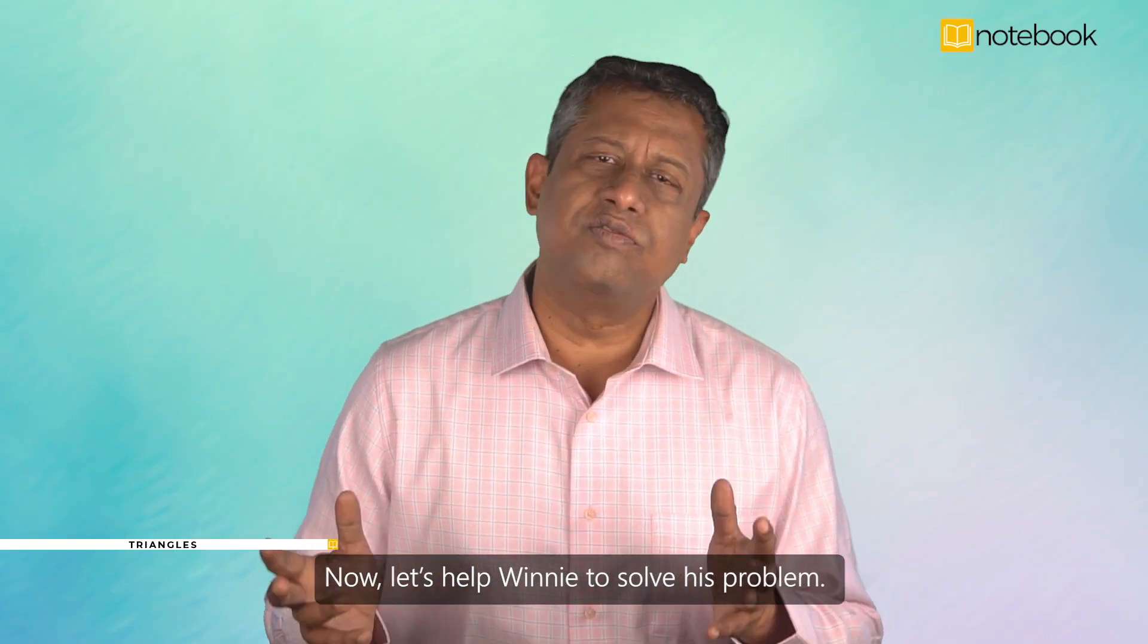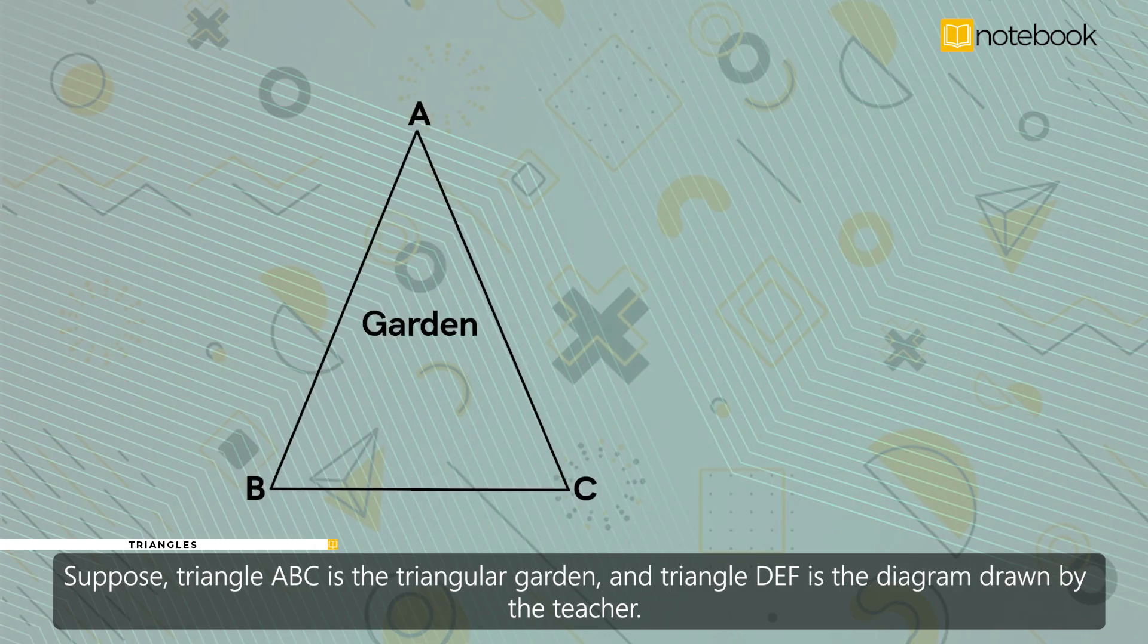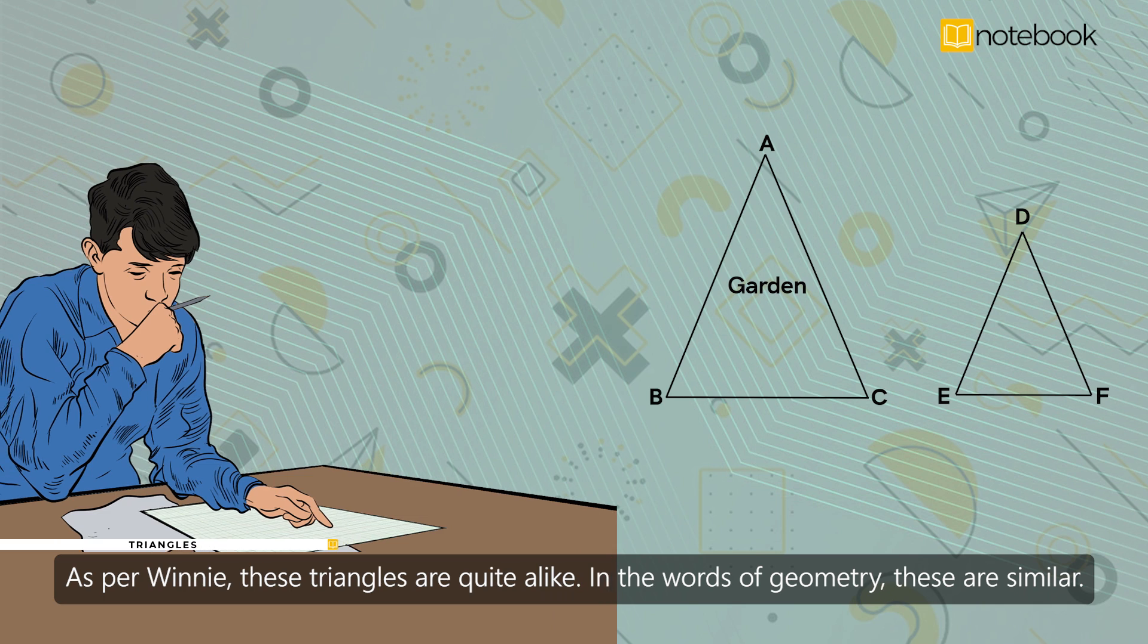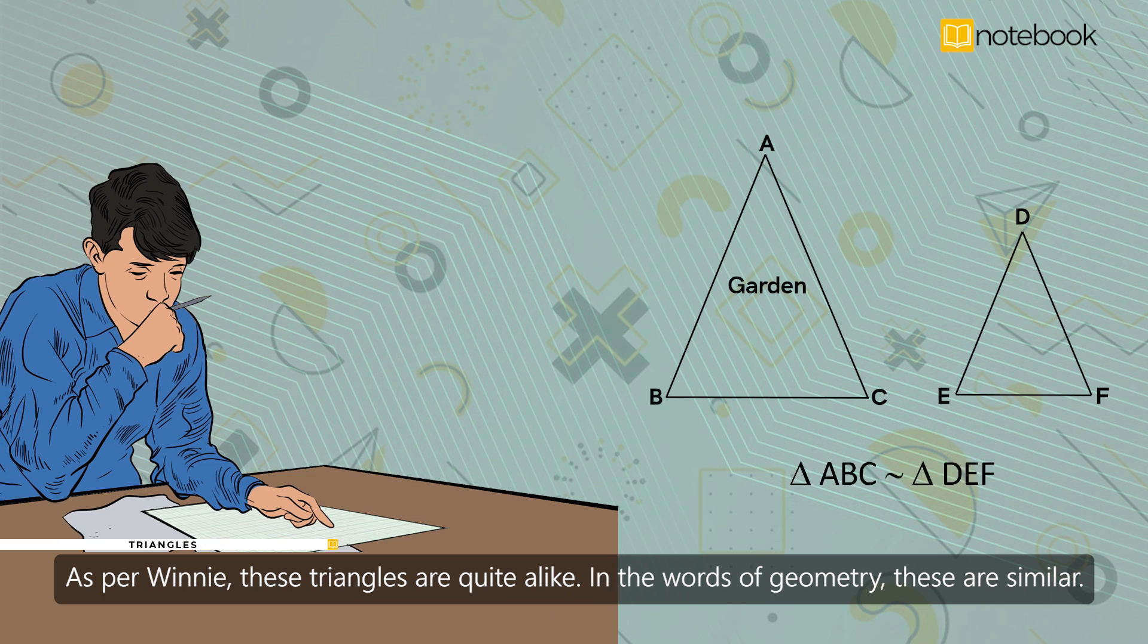Now, let's help Winnie to solve this problem. Suppose triangle ABC is the triangular garden and triangle DEF is the diagram drawn by the teacher. As per Winnie, these triangles are quite alike. In the words of geometry, these are similar.